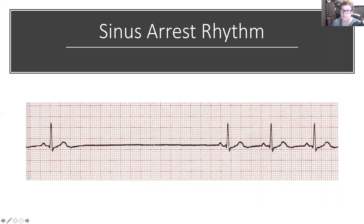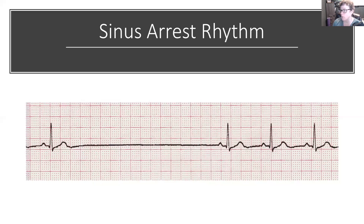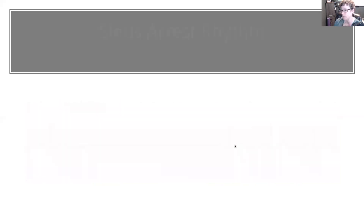The P wave that comes back after a sinus pause may or may not be round and upright. Recall that the intrinsic firing rate of the SA node is 60 to 100; it can go slower in bradycardia or faster in tachycardia. The intrinsic firing rate of the AV node is 40 to 60, and the Purkinje fibers are 15 to 40. The P waves will look different if our backup generators have taken over — it will not be round and upright, which is how we know an impulse is from the SA node.